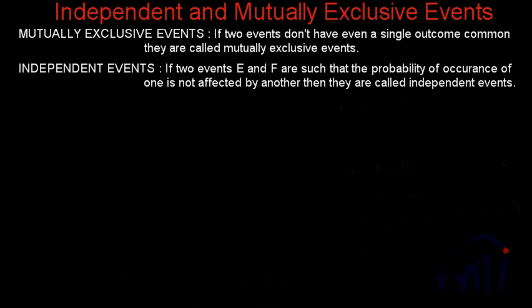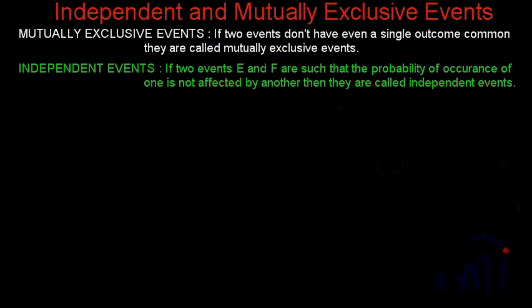In this video we are going to talk about independent and mutually exclusive events. As you can see, I have already noted down the definition. If two events don't have even a single outcome common, they are called mutually exclusive events. And if two events E and F are such that the probability of occurrence of one is not affected by another, then they are called independent events.